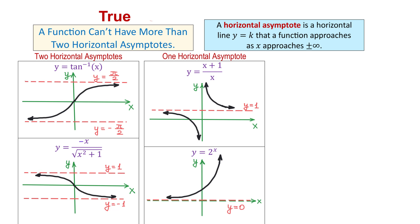Below we have the function y equals 2 to the x power. In this function, as x approaches negative infinity, the graph approaches the horizontal line y equals 0, which is the same as the x-axis. So y equals 0 is the horizontal asymptote.